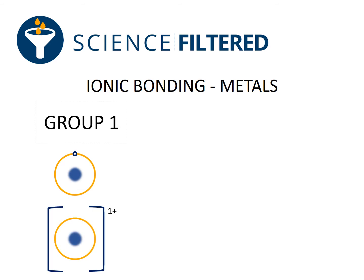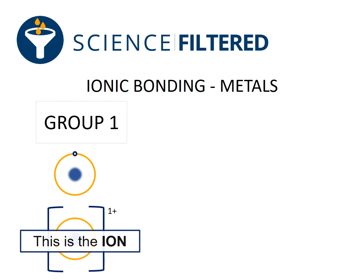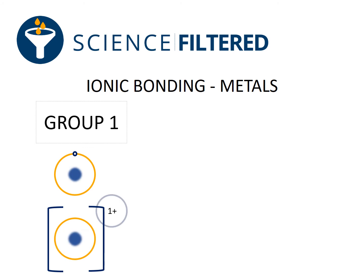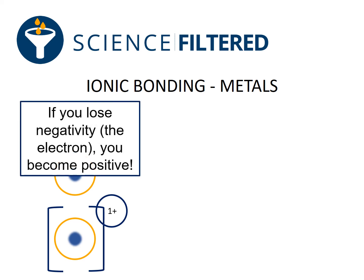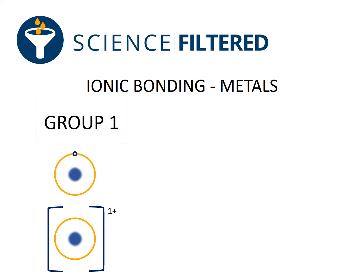Once it's lost that electron, it becomes an ion. And if you notice, that ion has a one plus charge in the corner, which can get confusing, right? Because you've just lost an electron and you're saying it's got one plus. But remember, if you lose negativity — if you lose that negative electron — then you become positive. So that ion has a one plus charge.